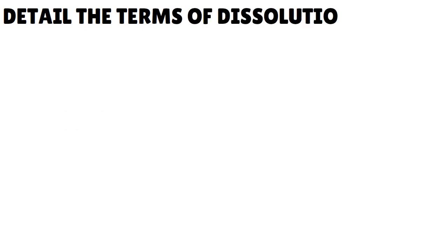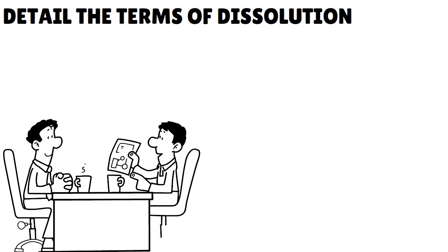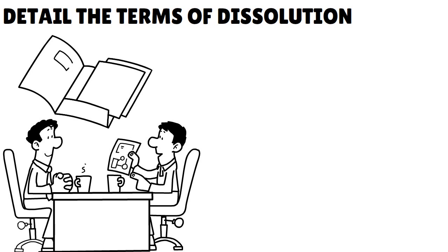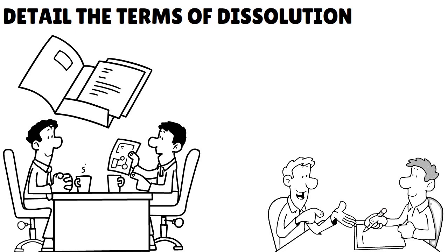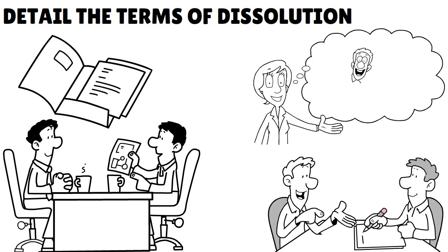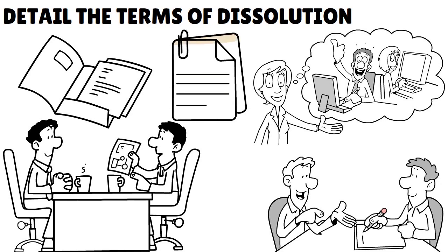Step four: detail the terms of dissolution. What are the circumstances under which the LLC can be dissolved? While it may sound odd to include a plan for the end of your business at conception, it's important to be prepared. Many LLCs have an expiration date when they are created, usually when a company is created for a specific project. When the project is complete, the LLC automatically dissolves. If you plan to have a project-specific LLC, including dissolution terms is a must.